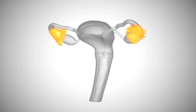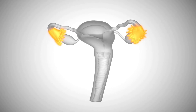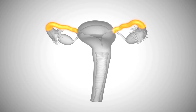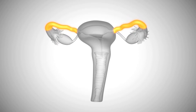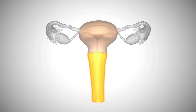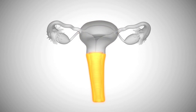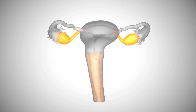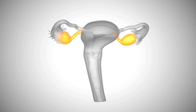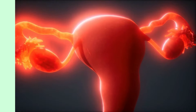Conception, or fertilization, is when sperm and an egg join together. It's one of the many steps that happen to create a pregnancy. Conception is closely related to a person's menstrual cycle. A menstrual cycle describes the sequence of events that occur within your body as it prepares for the possibility of pregnancy each month.